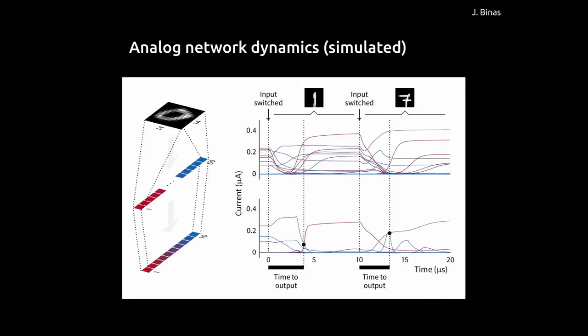Here's a simulation of such a system — a simple network with one hidden layer where the MNIST input is provided in terms of currents. On the top, you see the activations of the hidden units. As the input image is switched, it takes some time for these units to settle to a new state, essentially the time for electric charges to flow from one device to another. After some time, the correct output can be read out as the index of the maximally active unit in the output layer. It takes around several microseconds to compute this output, with no time stepping — everything is done in continuous time.